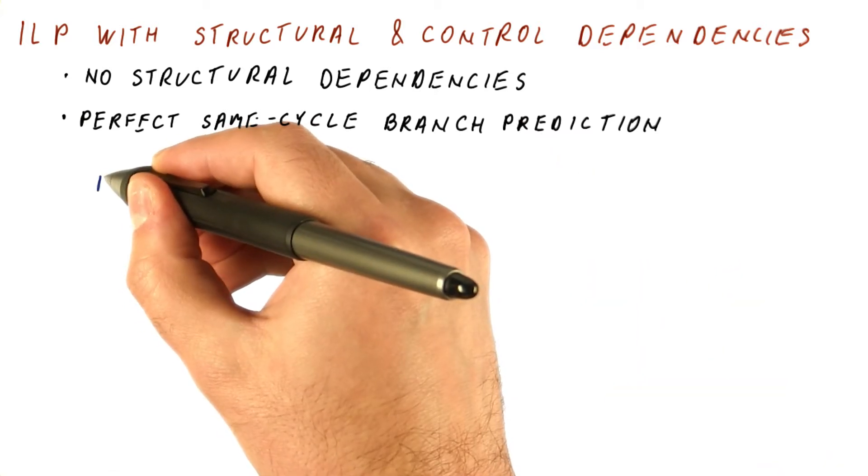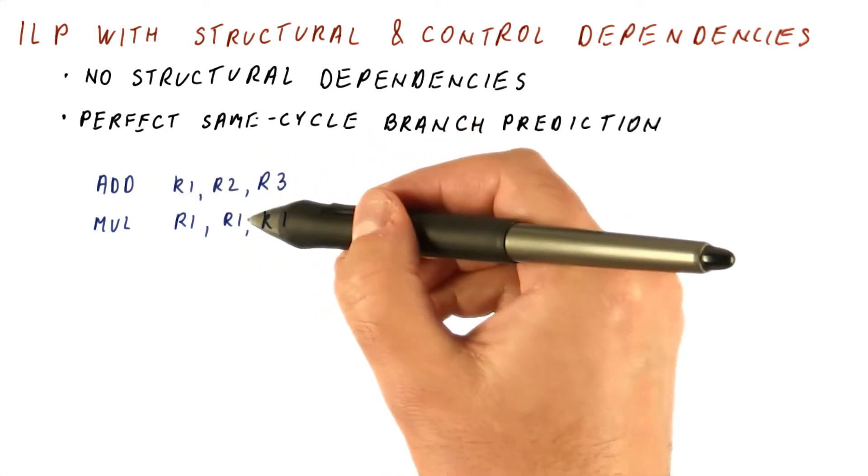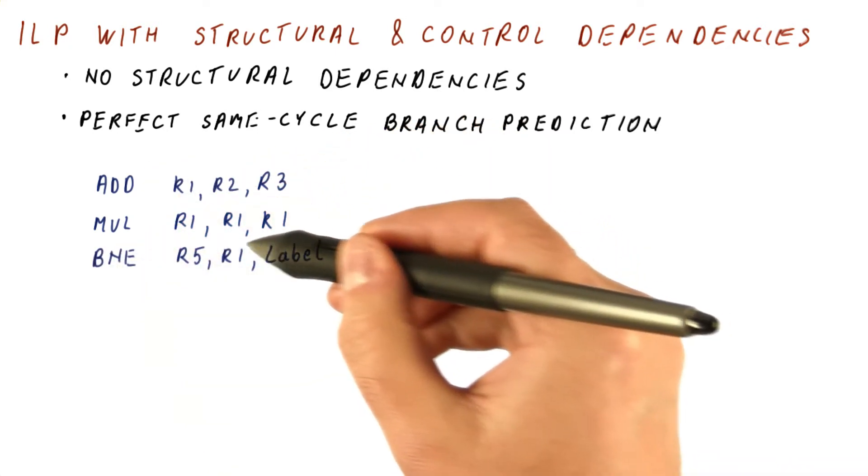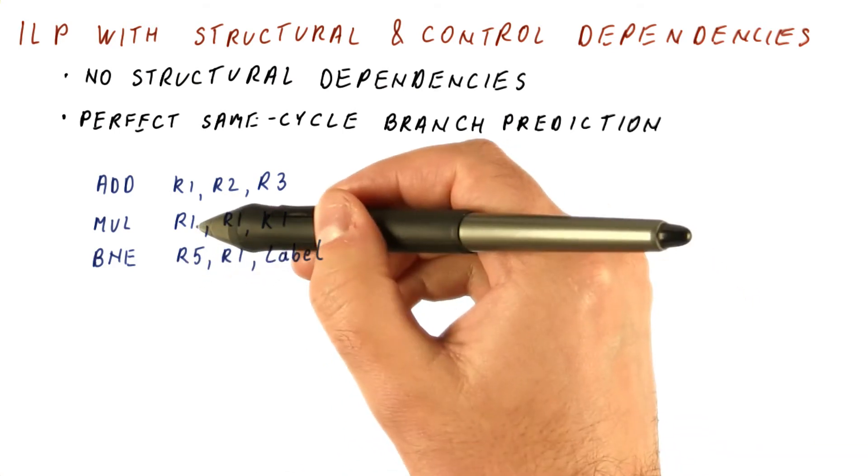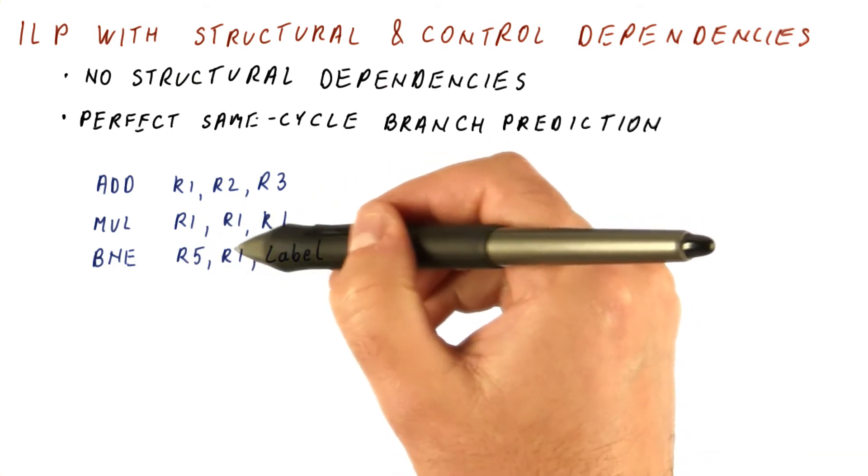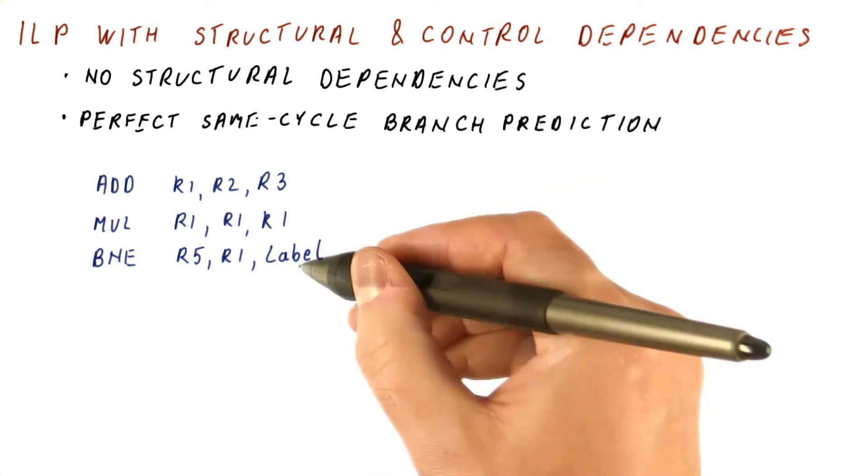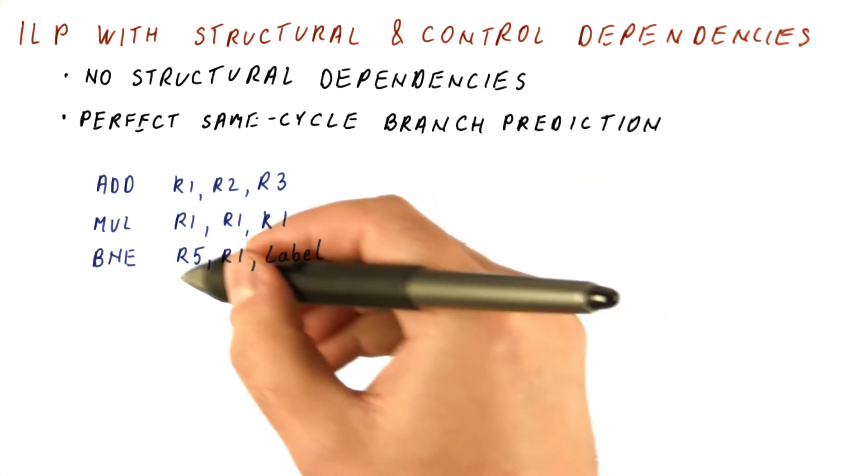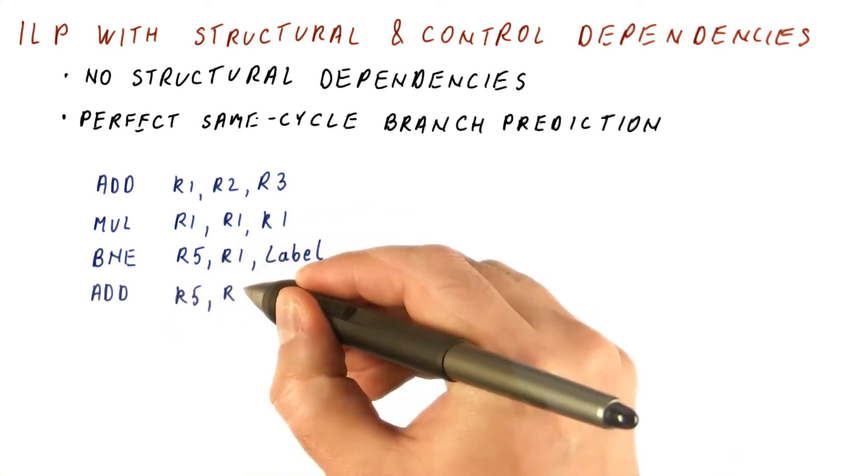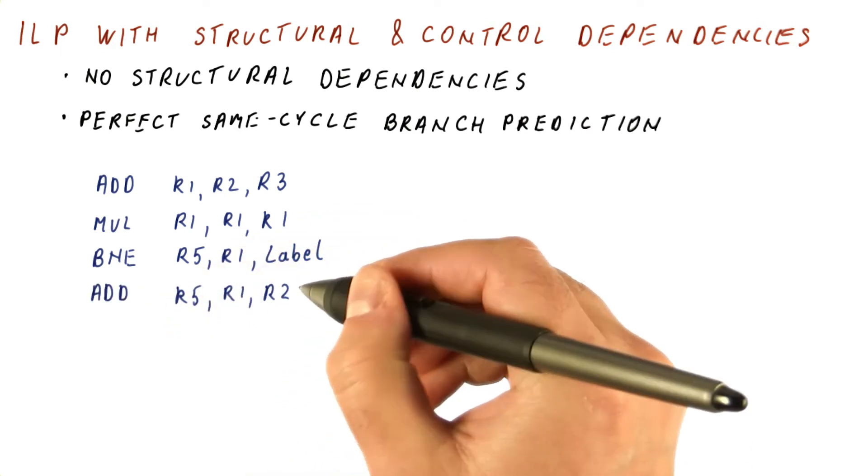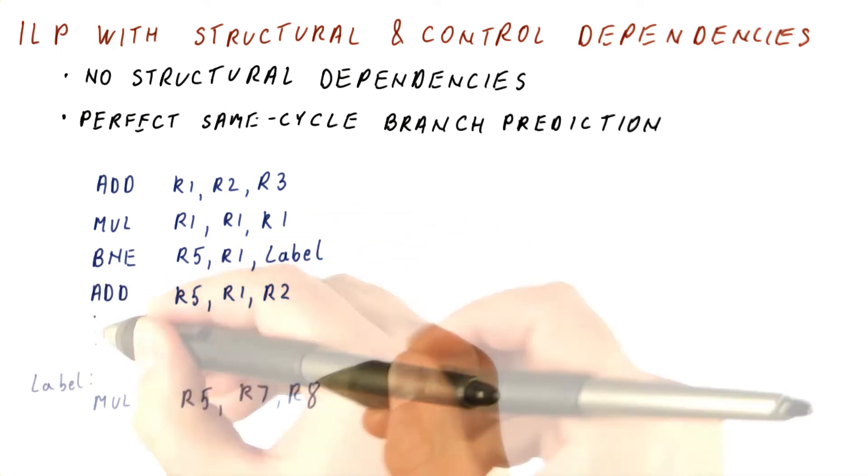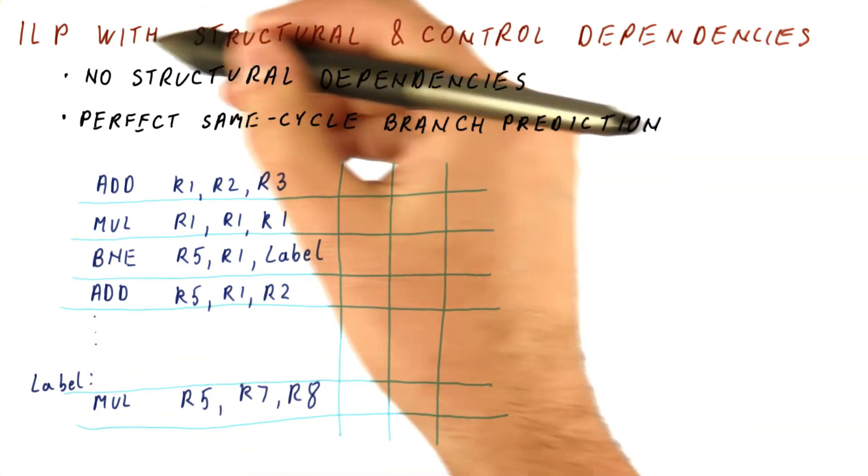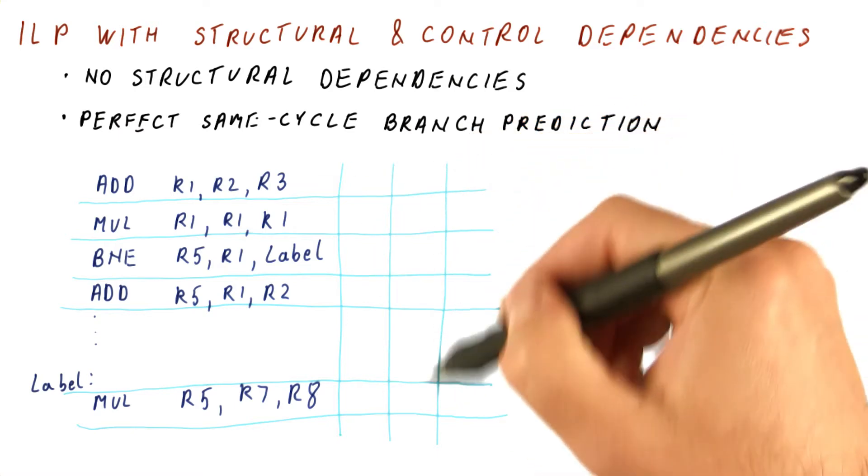Let's see an example of this, where we have a program that has a flow dependence and also an output dependence, and then we have a branch that has a flow dependence on R1 and branches to label if the condition is satisfied, otherwise continues on. And then after the branch in the program we have an instruction, and at the label we have another instruction. So now let's see how we compute ILP here, and these are again cycles.